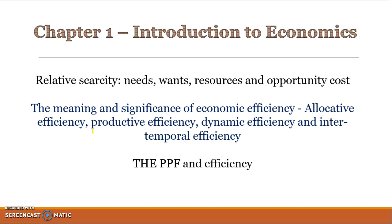In chapter 1 there's not a lot of study guide dot points. Basically, chapter 1 is all about relative scarcity, maximising efficiency, reducing opportunity cost, and looking at the PPF and efficiency.